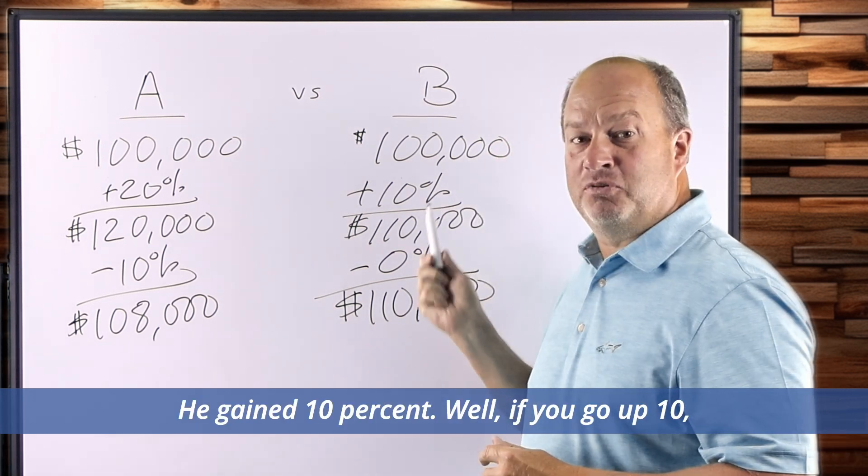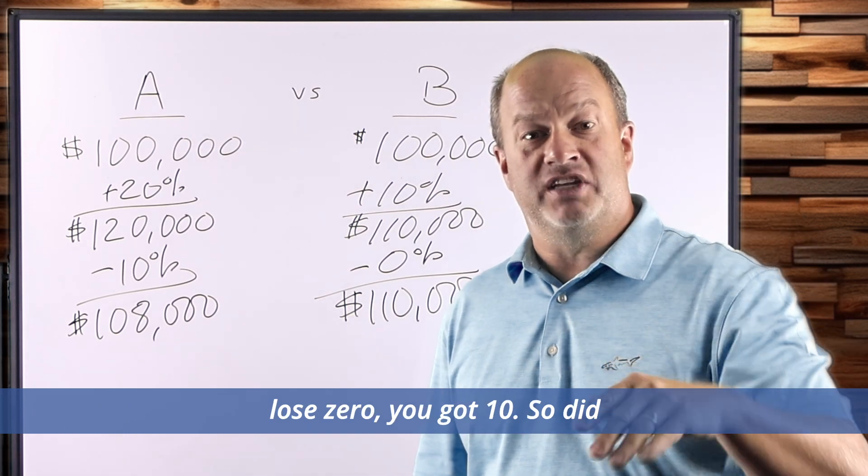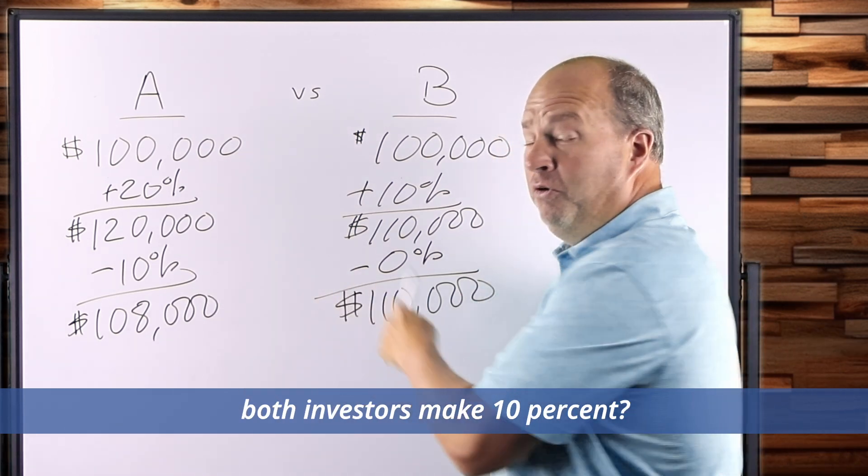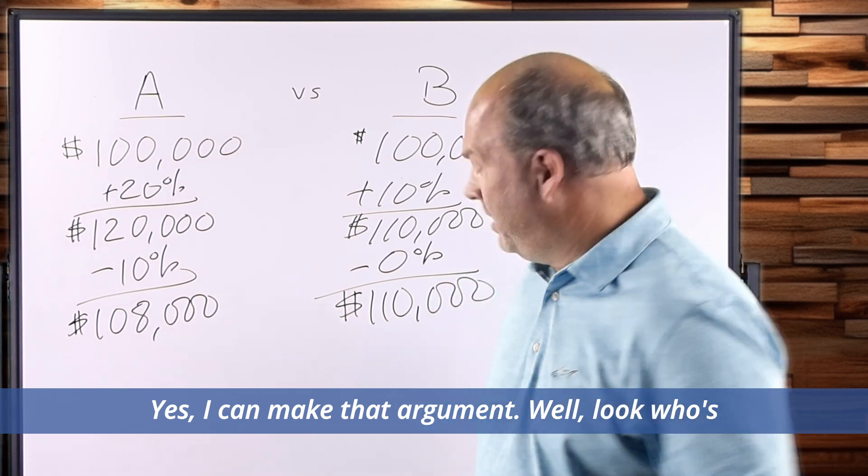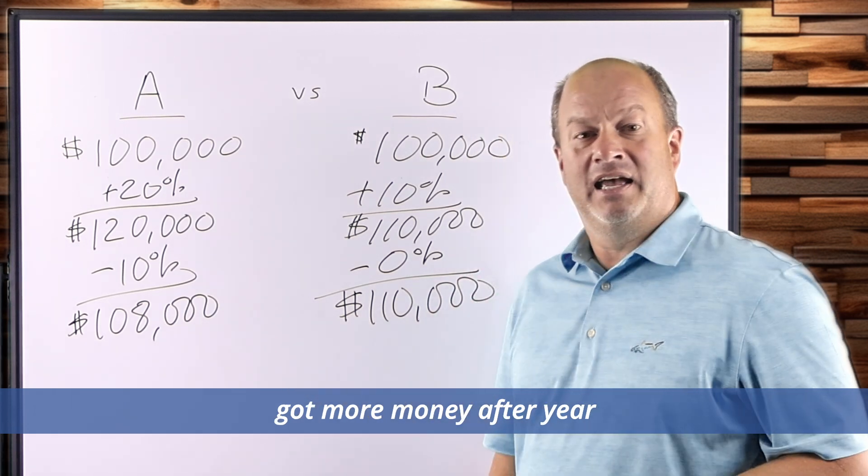He gained 10% and lost zero. If you go up 10%, lose zero, you got 10%. So did both investors make 10%? Yes, I can make that argument. But look who's got more money after year two.